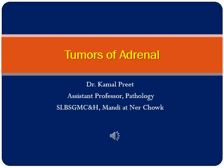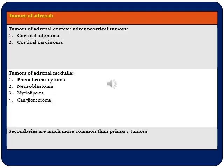In the last lecture we covered various hormonal disturbances of the adrenal cortex. In this lecture we will discuss various tumors of the adrenal cortex as well as medulla. Starting with the classification: the adrenal cortex and medulla are developmentally, structurally, and functionally different from each other, and similarly the tumors that arise in these two different regions of the adrenal are also different.